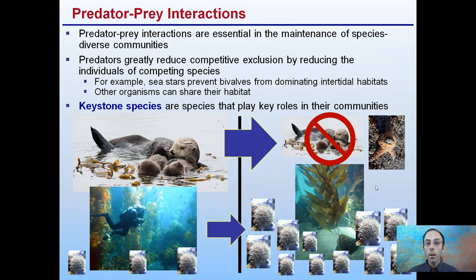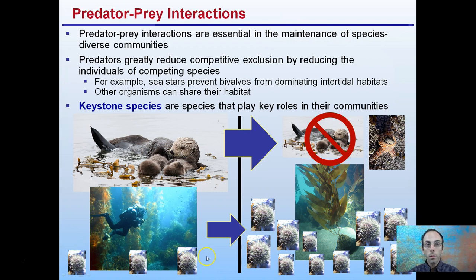These interactions are essential in the maintenance of species in diverse communities. Predators greatly reduce competition and exclusion by reducing individuals from competing species. For example, sea stars prevent bivalves from dominating the intertidal habitats, so other organisms can share this habitat.